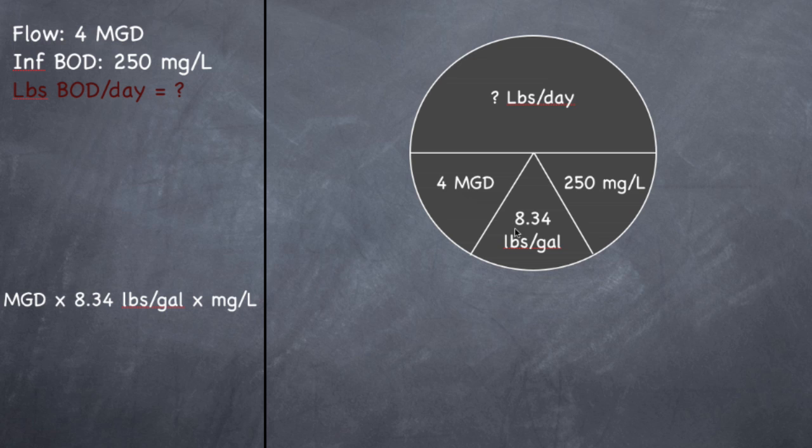And I want to find out how many pounds per day of BOD are coming into my plant. So when I multiply this by this by this, it's just like down here. Flow times 8.34 times concentration, flow times 8.34 times concentration. You should wind up with 8,340 pounds of BOD per day. And that's it. It's a very simple question.